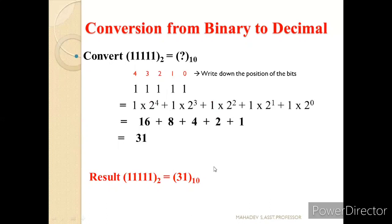Similarly, let us see another example to get familiar. 11111 base 2 equals how much in decimal? Write positions 0, 1, 2, 3, 4. So: 1×2⁴ + 1×2³ + 1×2² + 1×2¹ + 1×2⁰ = 16 + 8 + 4 + 2 + 1 = 31. So 11111 base 2 is equivalent to 31 in decimal.